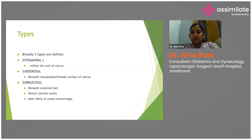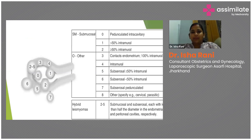Intramural fibroids depend on their exact location. If closer to the endometrium, they distort the endometrial cavity, and they also have endogenous prostaglandin production which leads to menorrhagia.